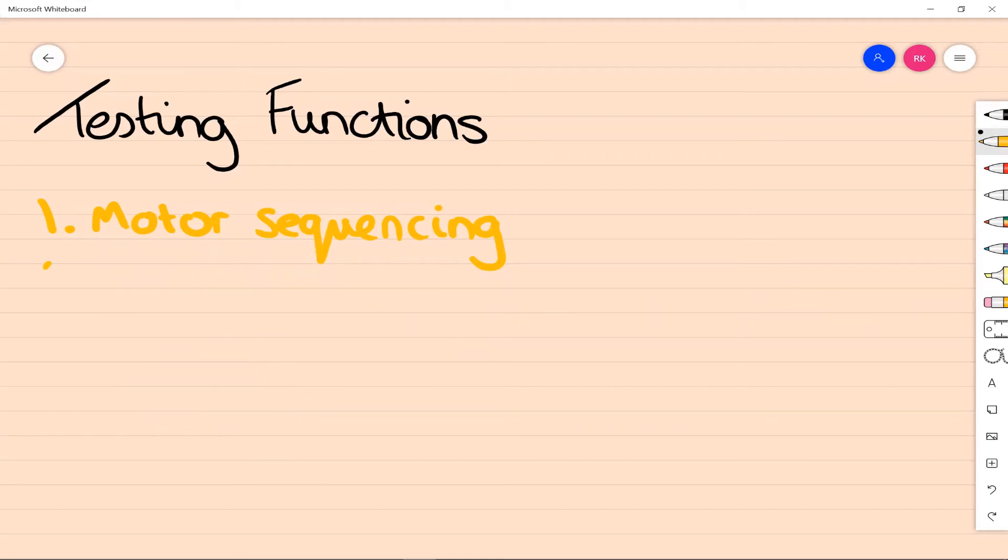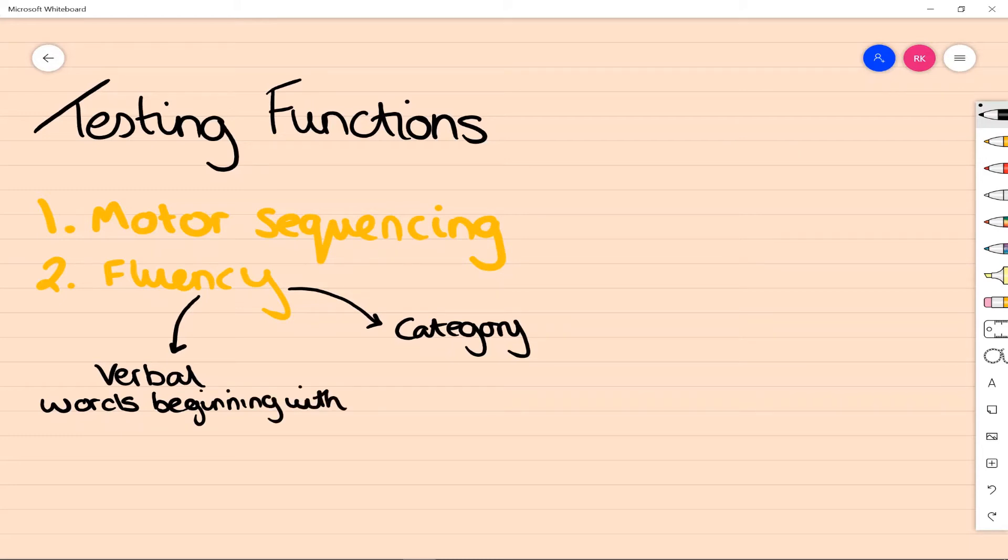The next thing we'll look at is verbal fluency and category fluency. Here we're looking at asking the person to name as many things as possible within 60 seconds for different areas. In verbal fluency, we ask them to name as many things as they can think of that begin with a certain letter—not names or places. In category fluency, we do the same thing but for a category of items, so for example we ask them to name as many animals as they can think of within the 60 seconds.